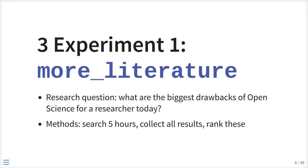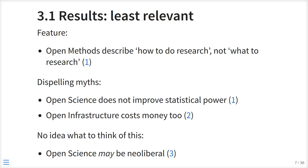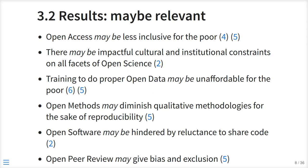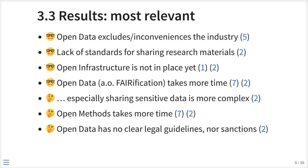Experiment one: I searched the literature. We're going to search for the biggest drawbacks of open science for a researcher today. For that, I searched the literature for five hours, which is about the same time I spent with the community. I collected all those results and ranked them. There are some least relevant things, some things that may be relevant, but I will only be focusing on the most relevant things.